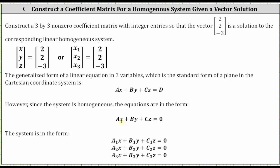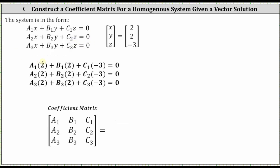Listing out all three equations for the system, let's use a sub one, a sub two, and a sub three for the coefficients of x; b sub one, b sub two, and b sub three for the coefficients of y; and c sub one, c sub two, and c sub three for the coefficients of z. Now that we know the form of the system, and we know x equals two, y equals two, and z equals negative three is a solution, we substitute two for x, two for y, and negative three for z into all three equations.